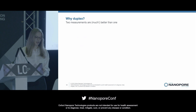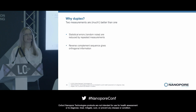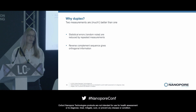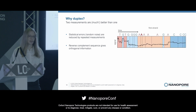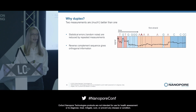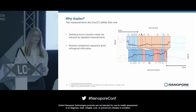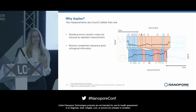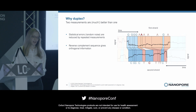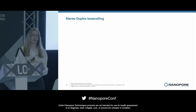Why is duplex so beneficial to accuracy? One aspect is simply that having two measurements reduces the impact of statistical noise. But in addition, the second strand has different bases and is moving in the opposite direction through the pore, so it's really orthogonal information compared to the first strand. Looking at real data, a snippet of a squiggle shows the first strand with bases annotated above, and the corresponding region from the second strand below — where time moves from right to left — representing the reverse complement sequence. Zooming in, there's one base where the two base calls disagree, and the second strand was correct, giving a feel for how these two very different signals work together to produce the duplex base call.